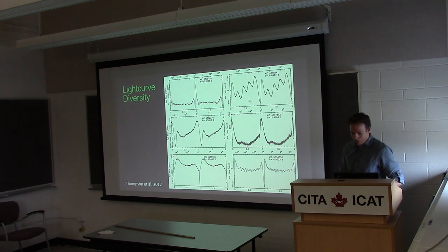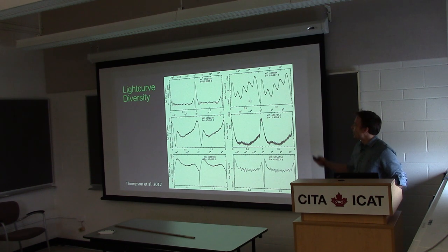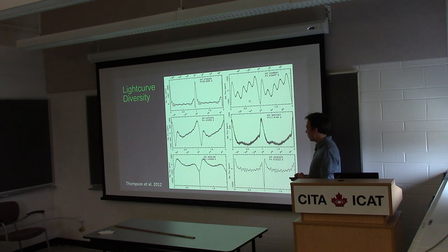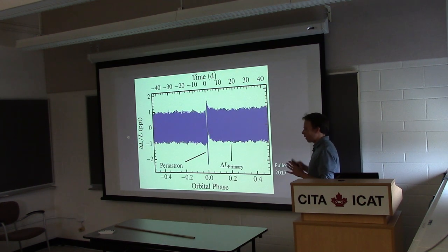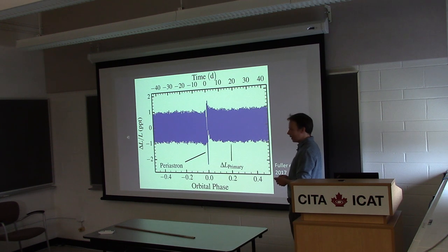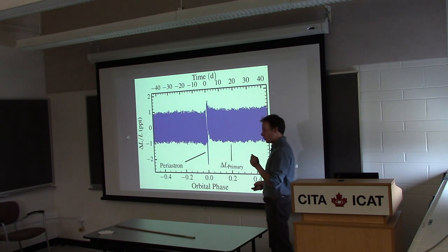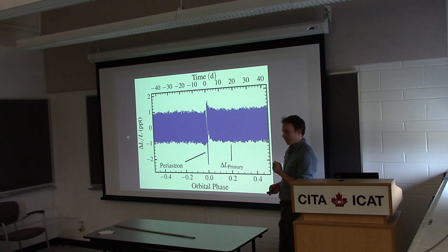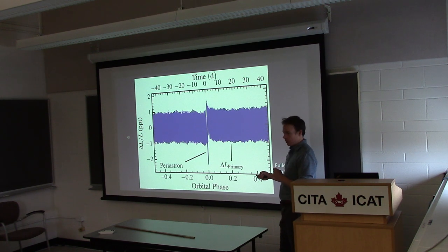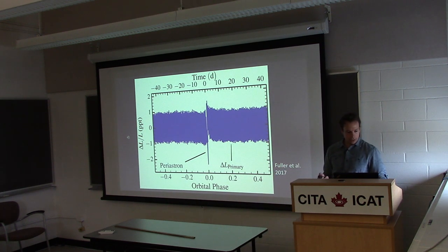All these heartbeat stars look different, so they're all telling us something different, depending on orbital and stellar parameters. Perhaps the most spectacular one is KIC 8164262. This is an extreme heartbeat star where what looks like noise is actually a well-resolved tidally excited oscillation at exactly 229 times the orbital frequency. You can get really high overtone modes excited, especially with a very eccentric binary — this one has eccentricity of about 0.9. If you zoom in on periastron, you see the large amplitude tidally excited oscillation and just a little blip of periastron passage.